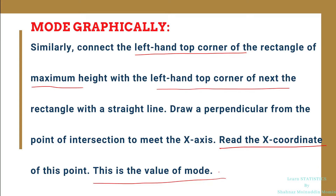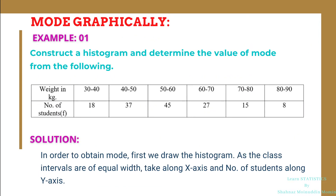Now we will take one example to understand how to obtain mode graphically with the help of a histogram. Consider the example: construct a histogram and determine the value of mode from the following data. Here we have weight in kilograms and number of students. Weights are expressed in the classes 30–40, 40–50, and so on up to 80–90, with the number of students for each class also given.